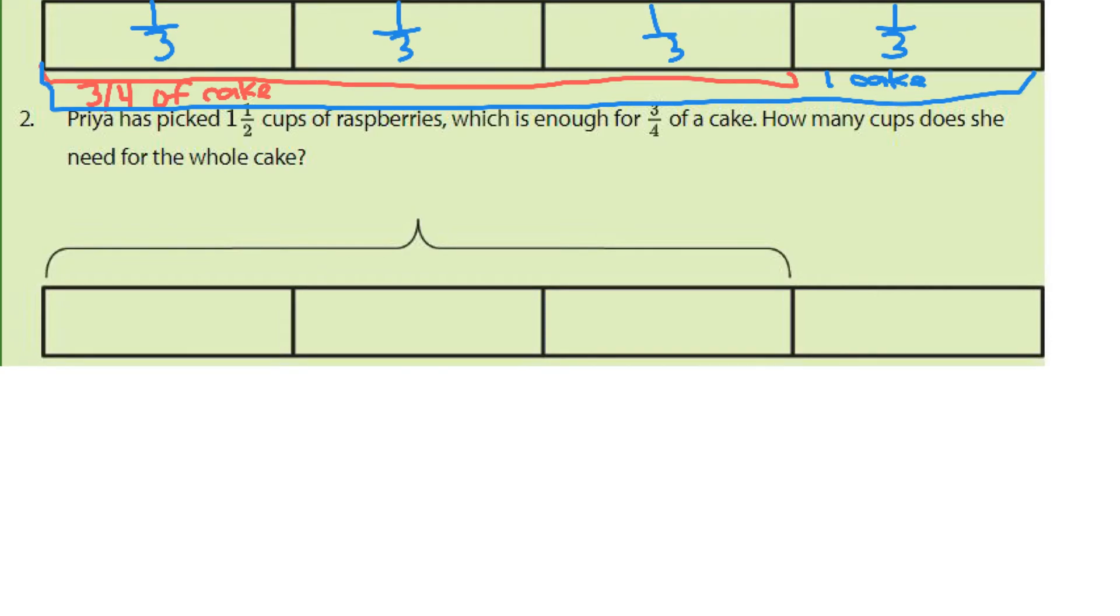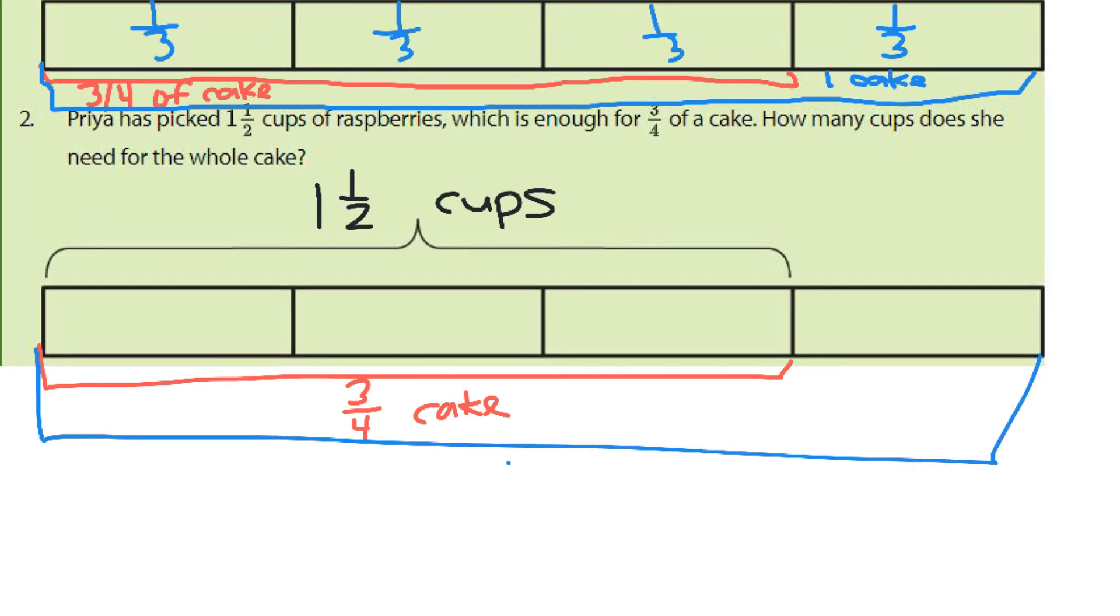Well, once again, now instead of one cup, this is going to be one and a half cups. And it's three-fourths of the cake. So this portion is three-fourths of the cake, which means our entire bar is one cake.